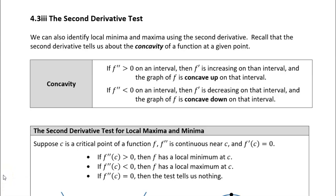In this section, we're going to talk about another test to determine whether a critical point is a local maximum or a local minimum. This test uses the second derivative — it's called the second derivative test. The second derivative tells you about the concavity of the function: if the second derivative is positive, the function is concave up; if it's negative, the function is concave down.